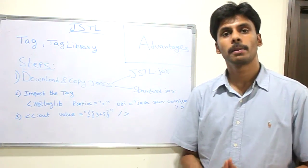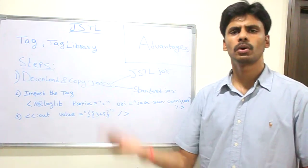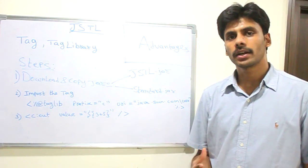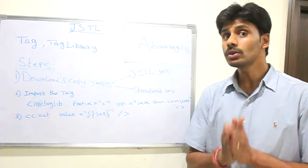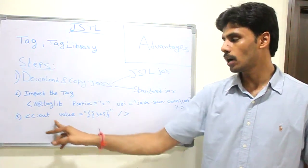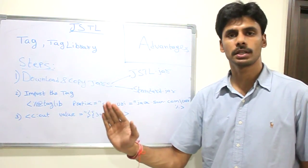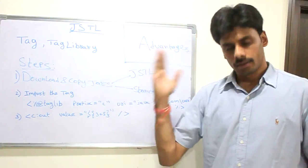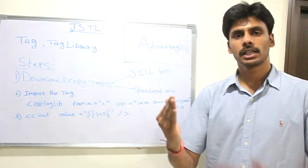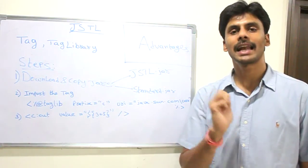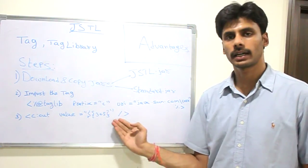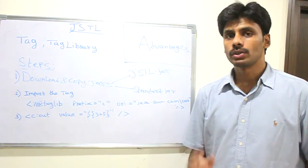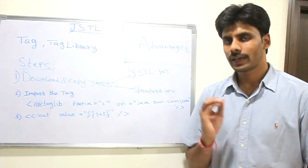So the advantages, as I have already mentioned: we can do parallel development — both HTML designers and Java developers can work on the same page. Maintainability becomes much easier because a lot of work happens behind the scenes, and you can use the same tag across your application. For example, c:forEach — if I want to loop through a collection coming back from the business layer to our JSP page, we can loop through it without a single line of Java code using tags. Reusability and maintainability are two important advantages of JSTL.